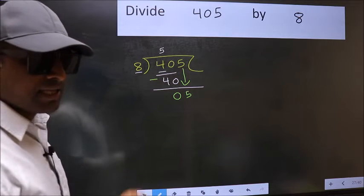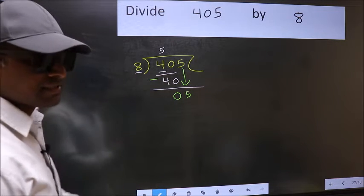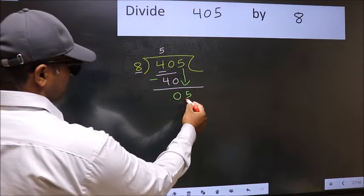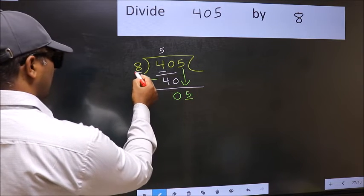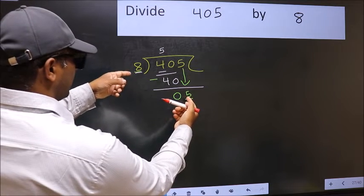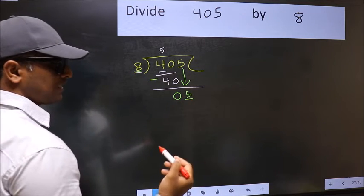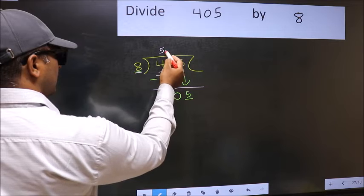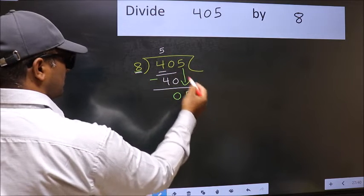And the mistake is this. Here we have 5 and here 8. 5 is smaller than 8. So what many do is, they directly put dot and take 0.